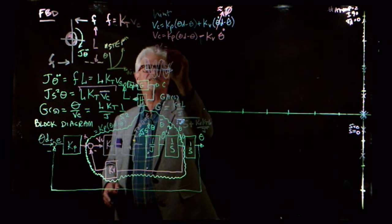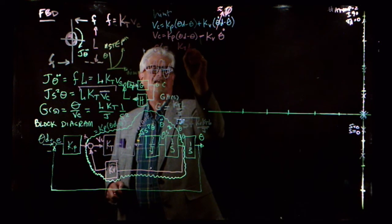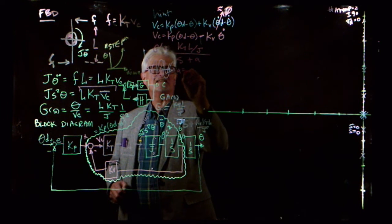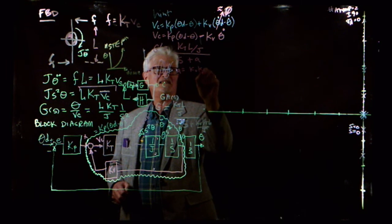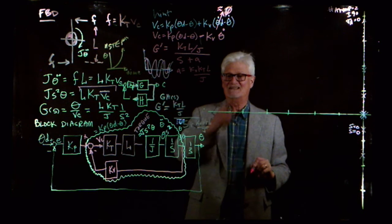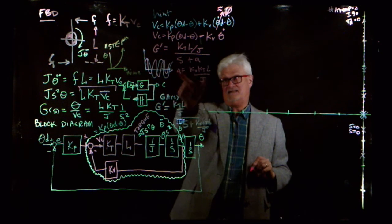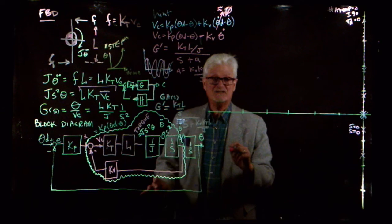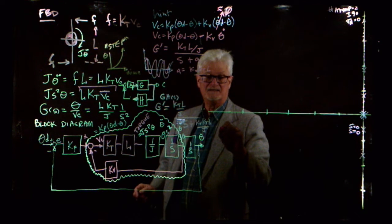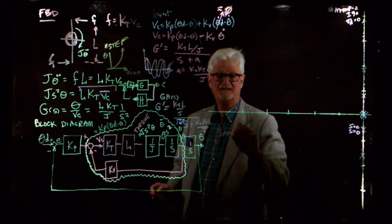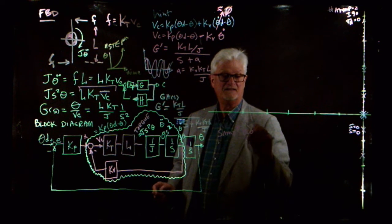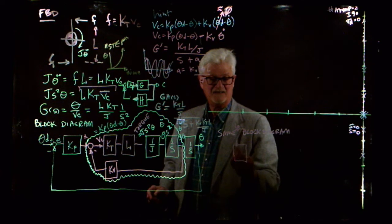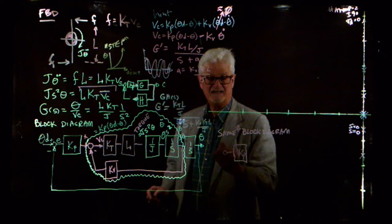So G-prime equals K_T*L over J divided by (S + A), where A equals K_V*K_T*L over J. That's what that A looks like. So if I go back and quickly redraw my block diagram with K_P, here's theta_desired with a plus, and the minus is theta.